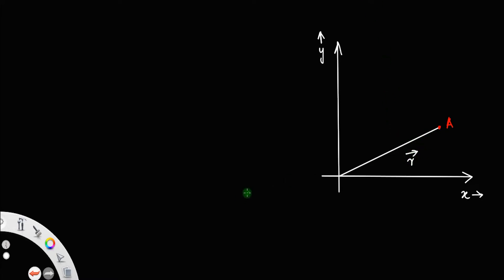After some time t, let the particle change its position from A to a new point B and let the new position vector be r plus delta r, that is since it covered a displacement of delta r.